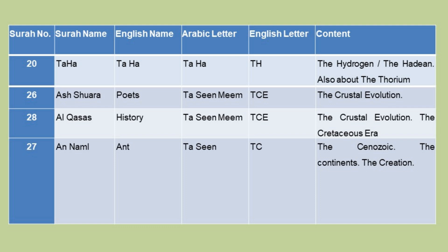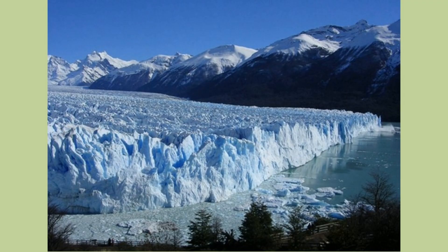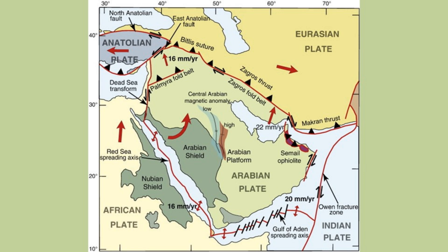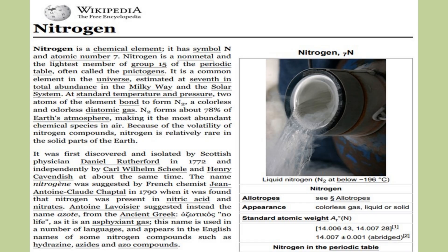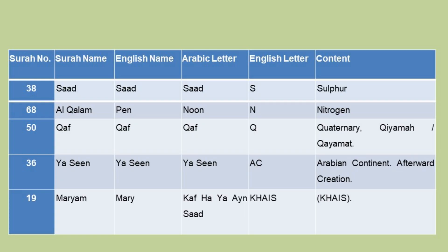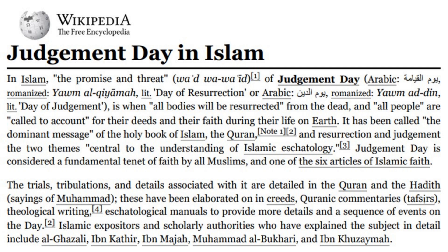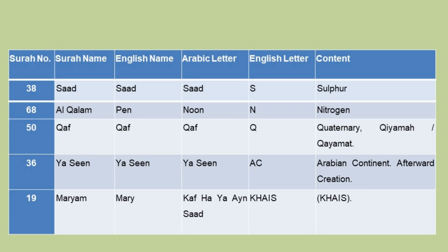Chapter 27 — Ta Sin — TC — the Cenozoic, the Continents, the Creation. This chapter is about the Cenozoic glaciations, separation of Arabia, and reassembling of continents in the future. Chapter 38 — Sad — S — Sulfur. Chapter 68 — Nun — N — Nitrogen. Chapter 50 — Khaf — Q — Quaternary, Hyama. This is about the end days, the Hyama, which will come at the end of the Quaternary.